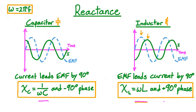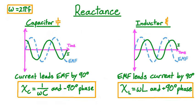In an inductor, the current peaks one-quarter of a period after the EMF, and in a capacitor, the current peaks one-quarter of a period before the EMF. If a circuit had both inductors and capacitors, the total reactance would be a combination of the inductive and capacitive reactances. If we look at our two graphs, we see that the current through the capacitor and the current through the inductor always have opposite signs — where the capacitor current is positive, the inductor current is negative, and vice versa. This is because the inductor introduces a 90-degree phase shift forward and the capacitor introduces a 90-degree phase shift backward, giving a net 180-degree phase shift, or half a period, between the current through the inductor and the current through the capacitor. For a sinusoid, shifting by half a period is equivalent to changing the sign.